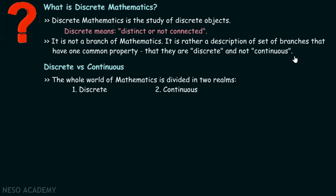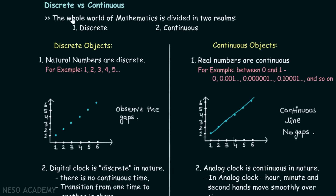Now let's try to understand the difference between discrete and continuous. The whole world of mathematics is divided into two realms: discrete and continuous. Natural numbers are discrete — for example, 1, 2, 3, 4, 5 are all natural numbers, starting from 1 and going up to infinity. Between 1 and 2, there is no number; there is a sharp transition from 1 to 2, and 2 to 3, and 3 to 4, and 4 to 5, etc.